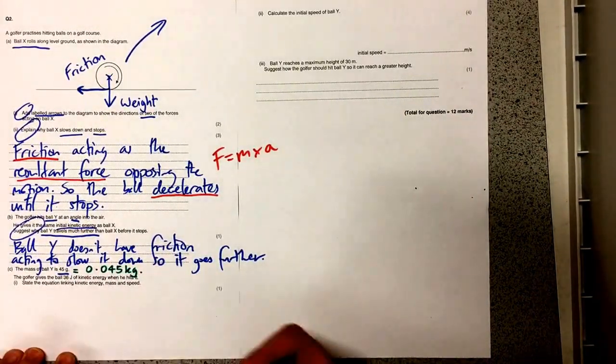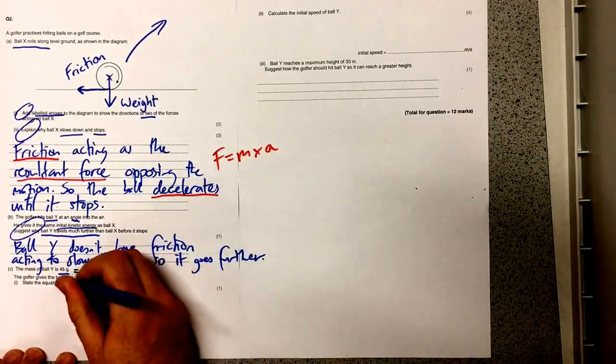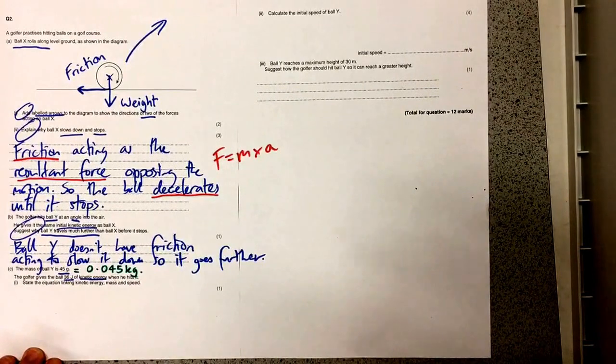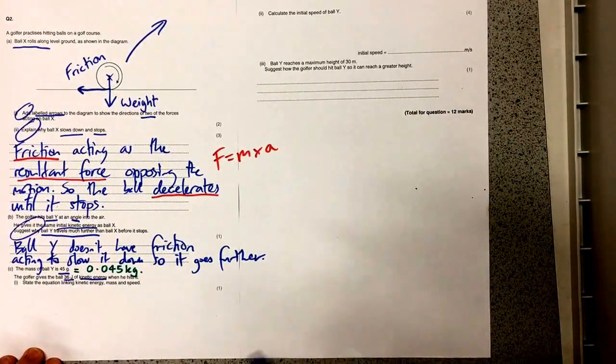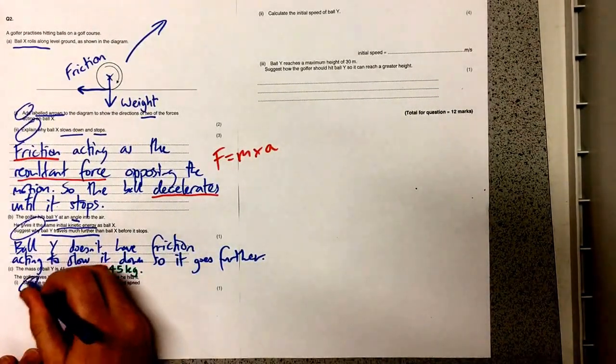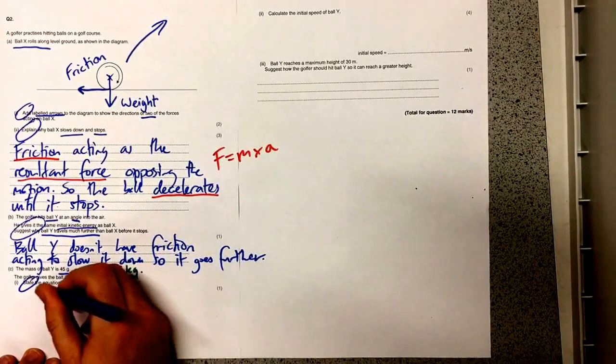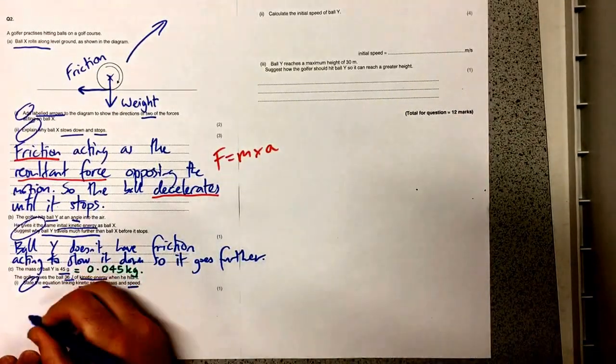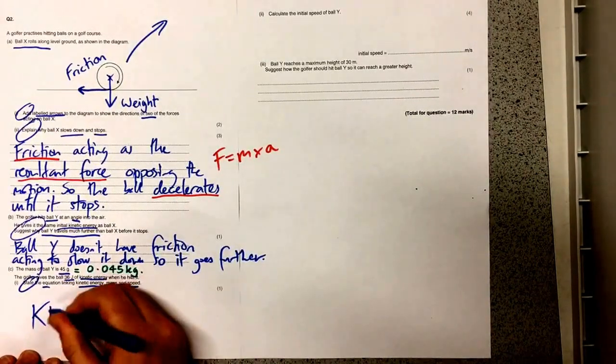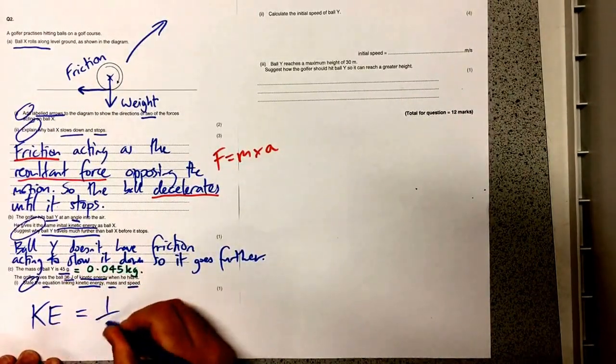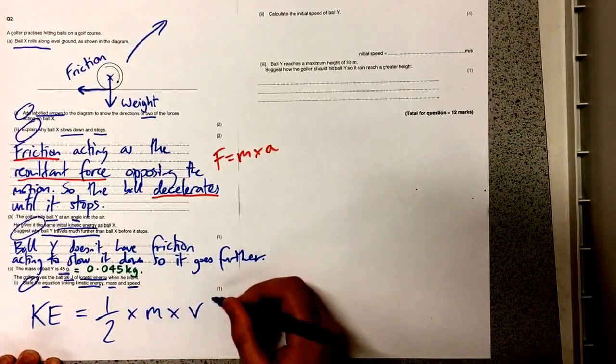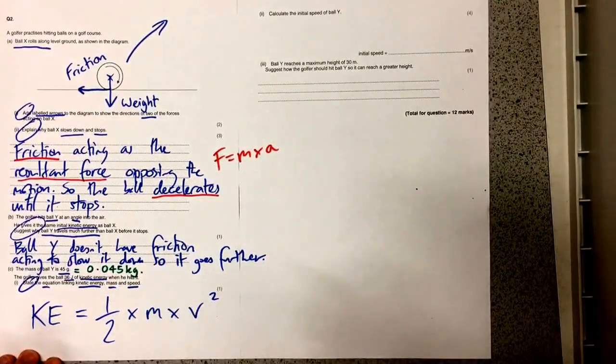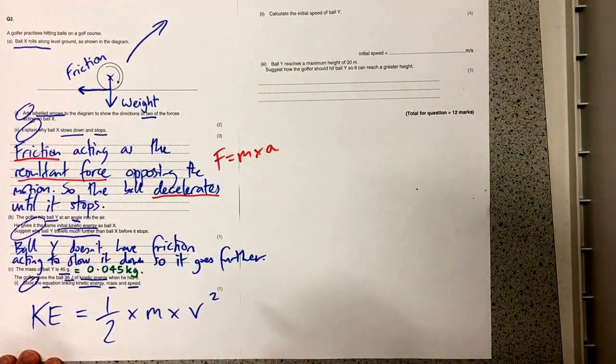So let's look for some more information. We've got the kinetic energy that the golfer has given the ball of 36 joules and now here's another question states the equation linking kinetic energy mass speed. So I've got to remember this equation kinetic energy equals a half times the mass times the velocity squared. You've got to know that equation otherwise you're going to miss that easy mark.